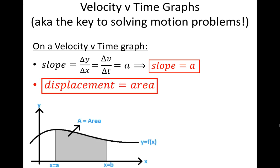You can use area under the curve to find the object's displacement. Area under a curve is defined as the area bounded by the curve itself, by the horizontal axis, and by two limits. The limits on a velocity-time graph correspond to the initial time, or beginning time, and the final time, or ending time, for which we're trying to find the displacement or change in position.